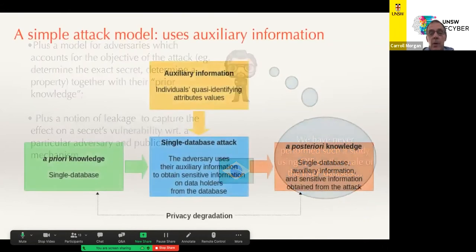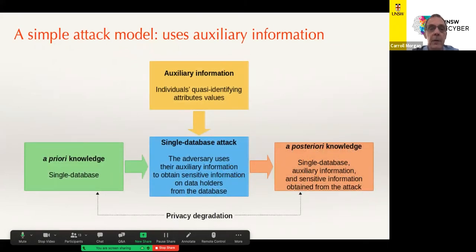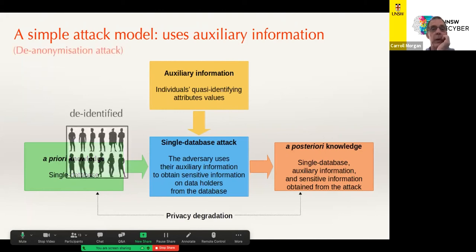So here's what a simple scenario looks like for an attack of this kind. There's a priori knowledge, that's the knowledge that's sitting in the database. Here we've just got a single database. Then there's a single database attack where the adversary uses sometimes auxiliary information that's lying around somewhere else to obtain sensitive information on the data holders in the database. Information that he or she should not have been able to obtain. The result of that is so-called a posteriori knowledge, which means that you know more about the individuals and their characteristics than you knew in the green a priori on the left-hand side.